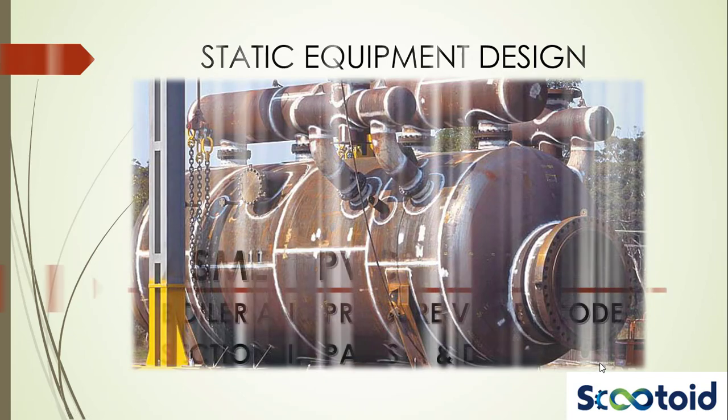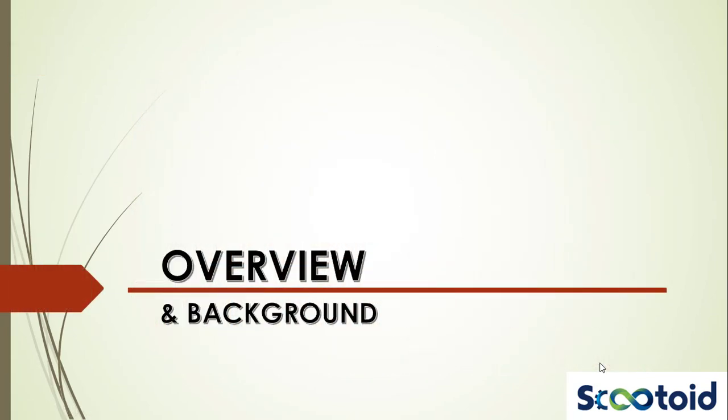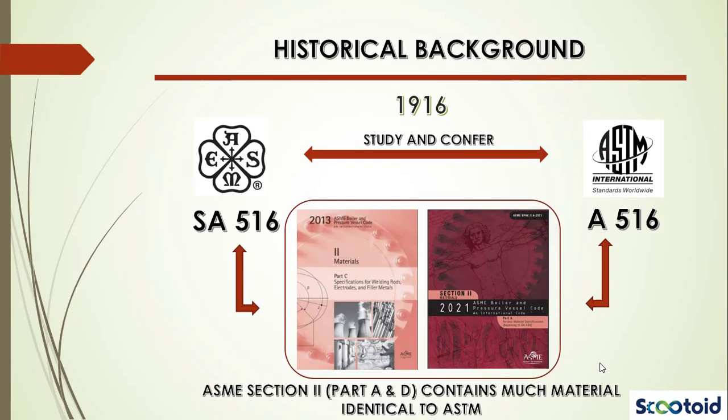In this module you'll get an overview of the ASME Boiler and Pressure Vessel Code, Section 2, Parts A and D, which cover various aspects. But first, some historical background.